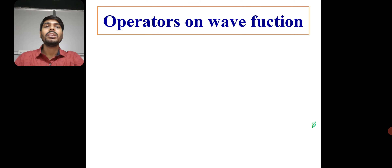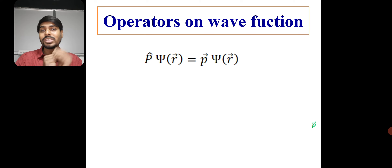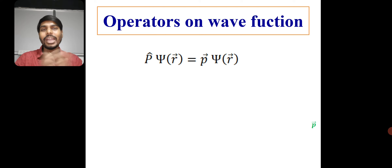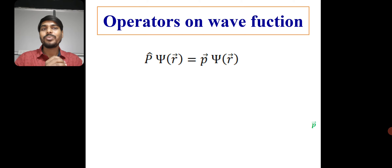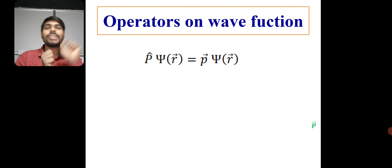To understand what this means, let's take an example using the wave function psi. I believe you have a clear concept of psi, but if you still have doubts about the wave function or probability density, please write in the chat box and I will explain later. So if the momentum operator p-hat acts on the wave function psi, we get the momentum p times psi. This type of equation is known as the eigenvalue equation.